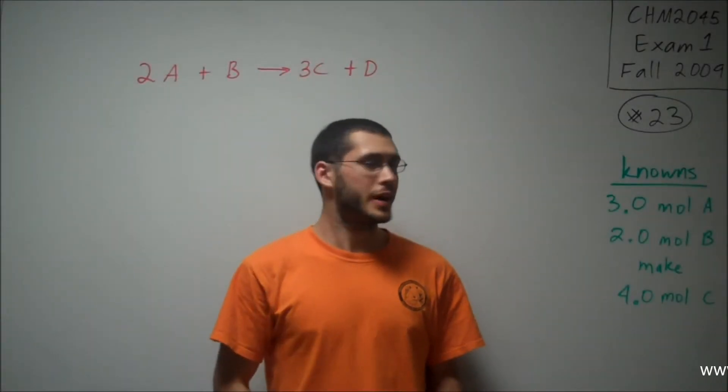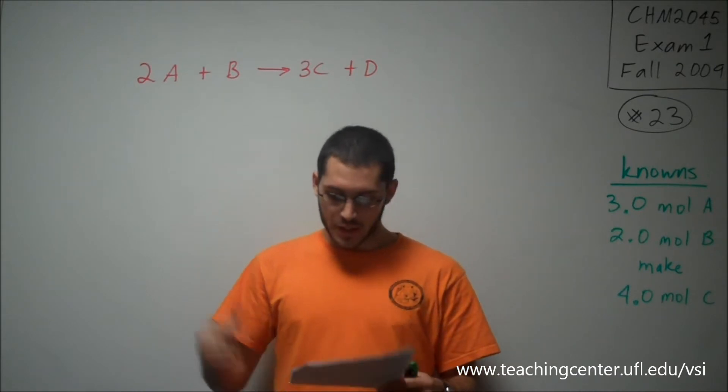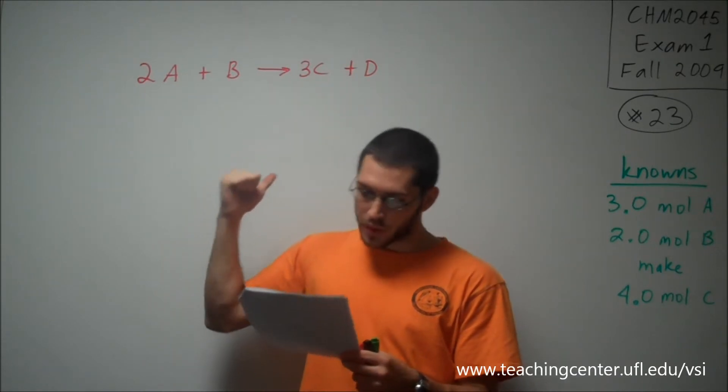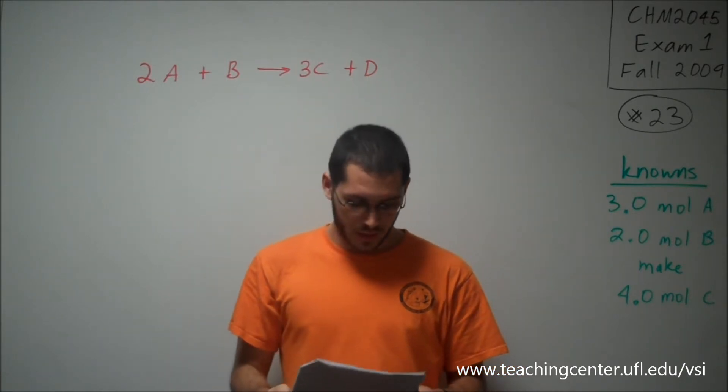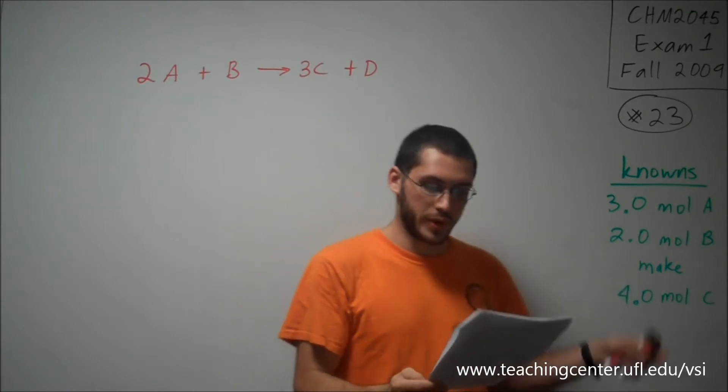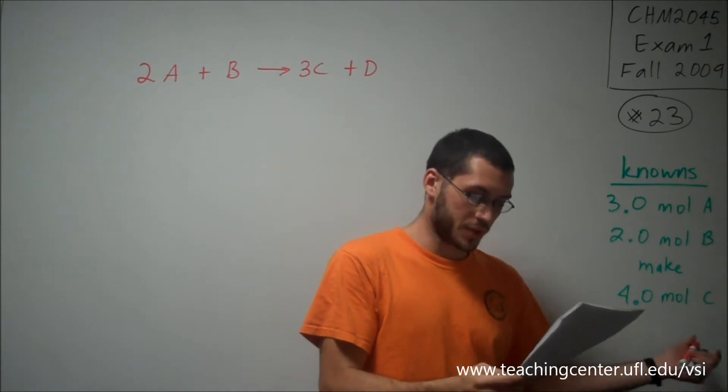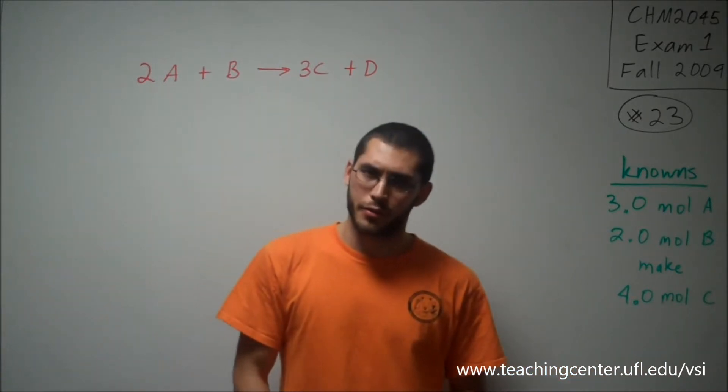All right, this is CHEM 2045's Exam 1, Fall 2009, number 23. Consider the following reaction: 2A + B → 3C + D. If you have 3.0 moles of A and 2.0 moles of B react to form 4.0 moles of C, what is the percent yield of the reaction?